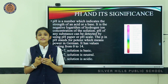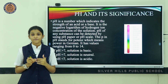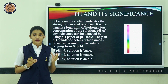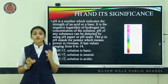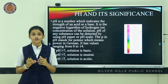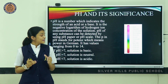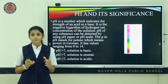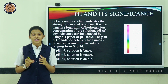Now let's see what pH is and its significance. pH is a value that indicates the strength of an acid or base — it is the negative logarithm of the hydrogen ion concentration present in the solution. The pH of any substance can be detected using a pH paper or pH meter.